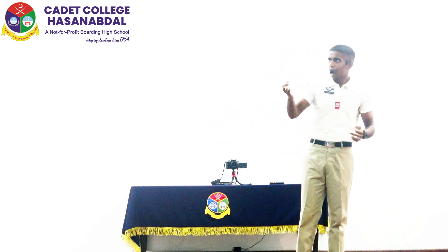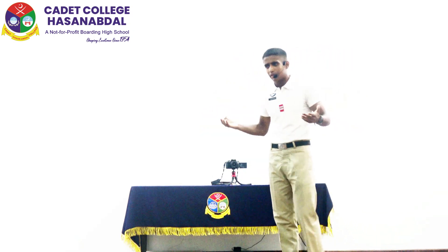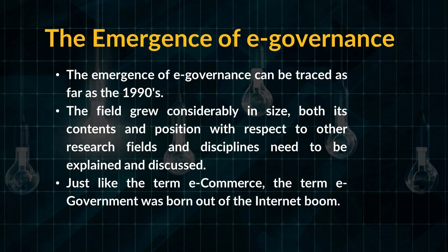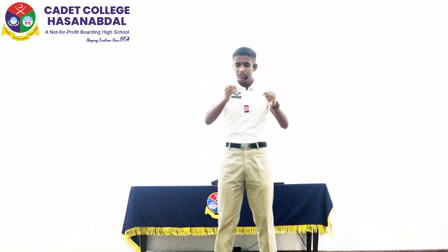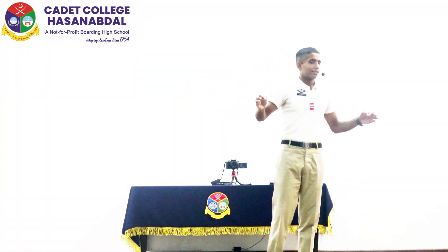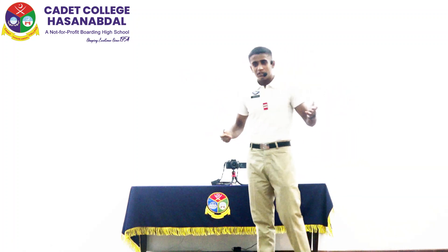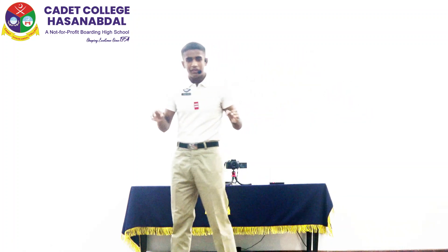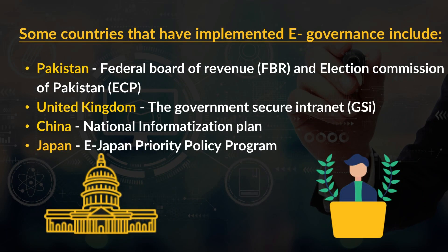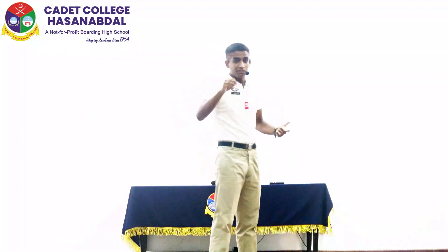Explaining how electronic governance came into being is essential for understanding it. Officially, electronic governance came into being in the 1990s. Unofficially, however, it dates all the way back to the 1970s when computers took over the market. Since its emergence, electronic governance has been implemented by numerous countries.